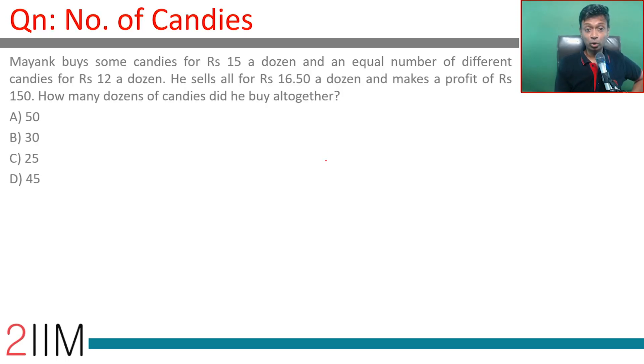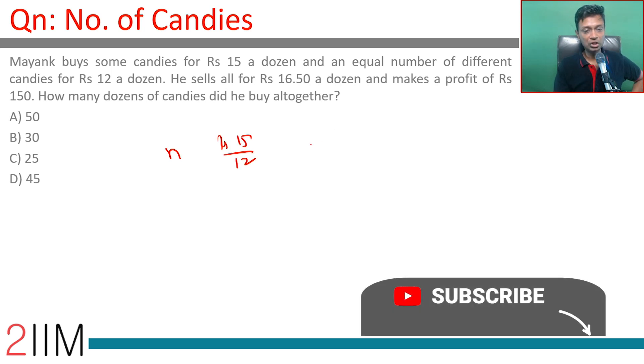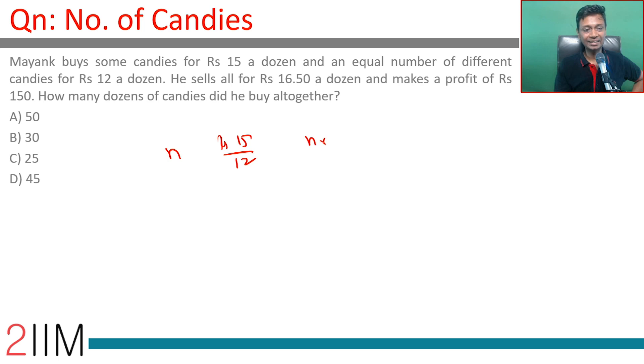Mayank buys some candies for Rs 15 a dozen and an equal number of candies for Rs 12 a dozen. Let's say he buys n candies at Rs 15/12 each and then n candies at Rs 12/12 each.